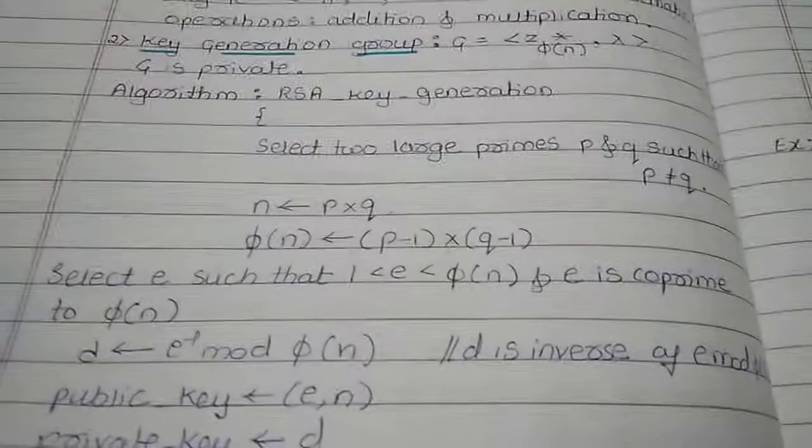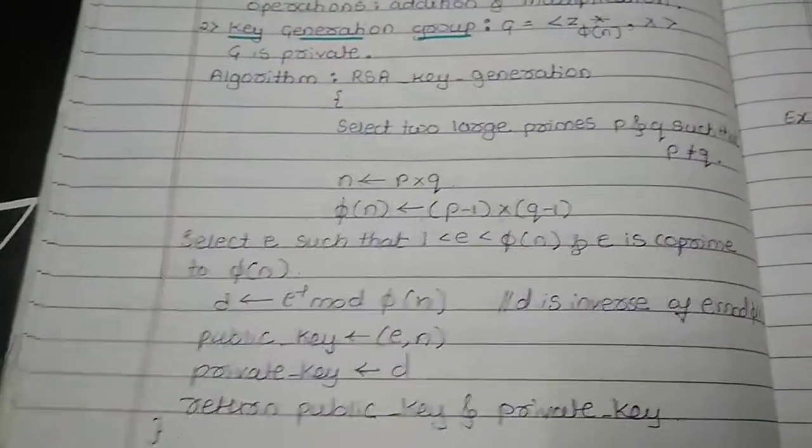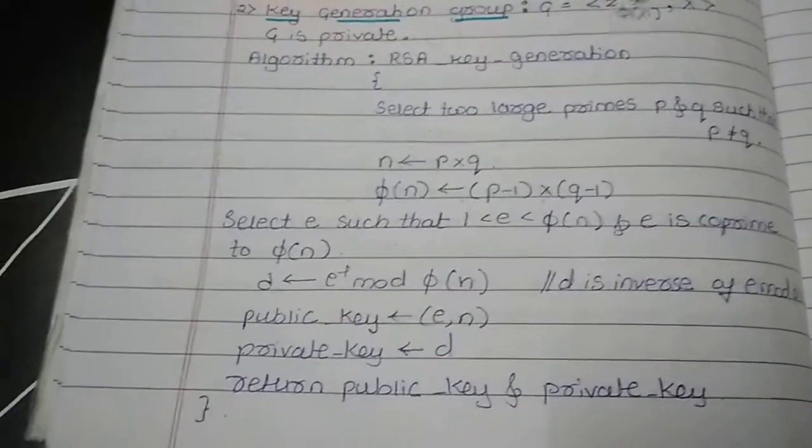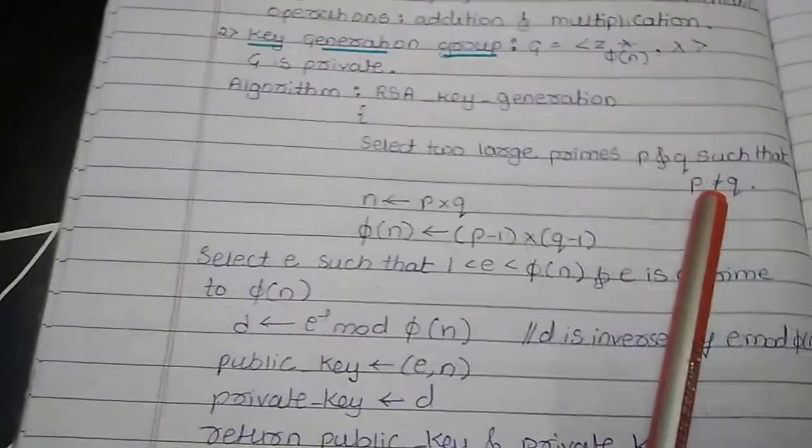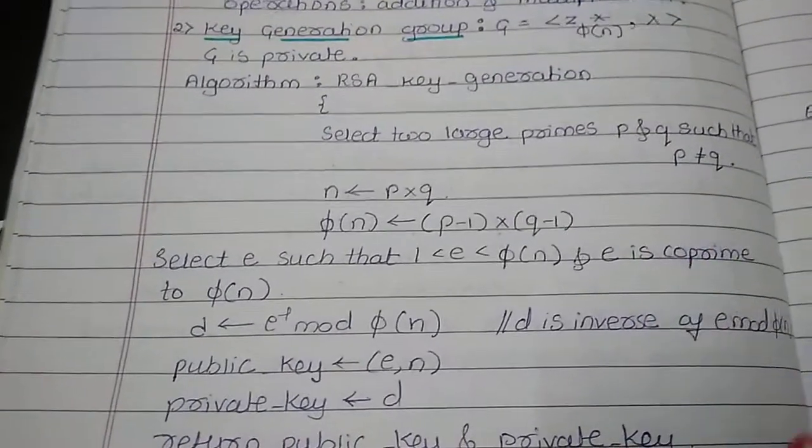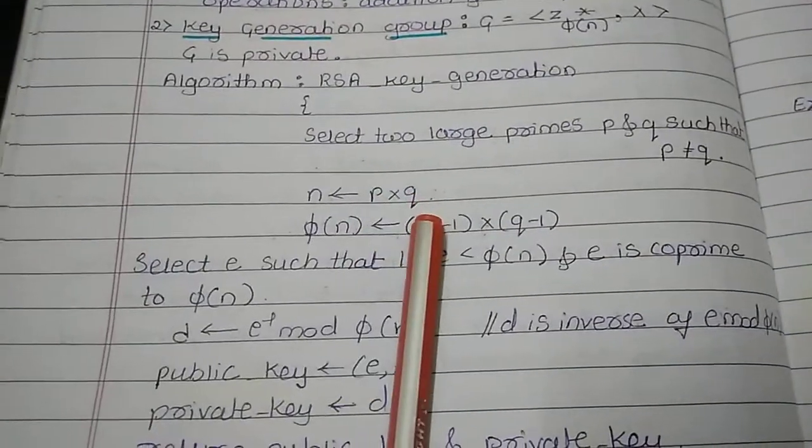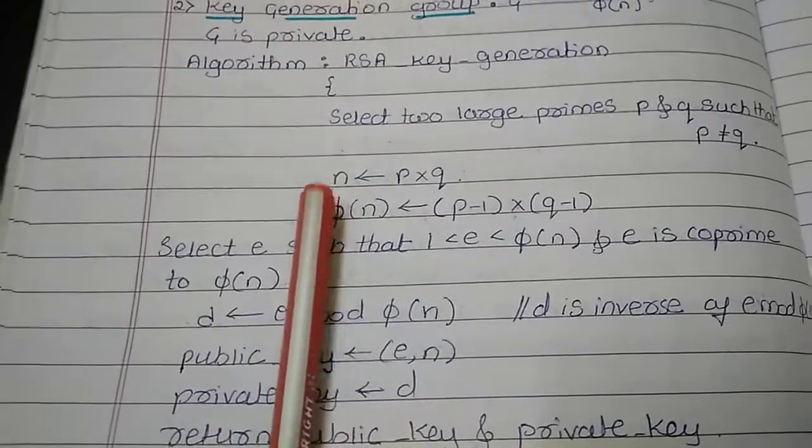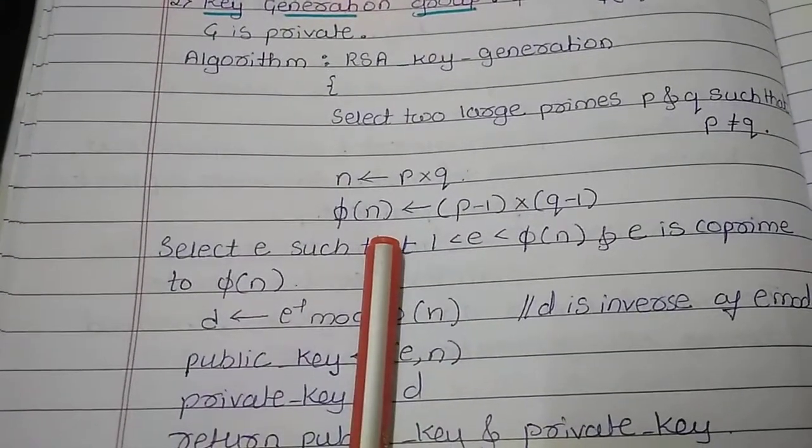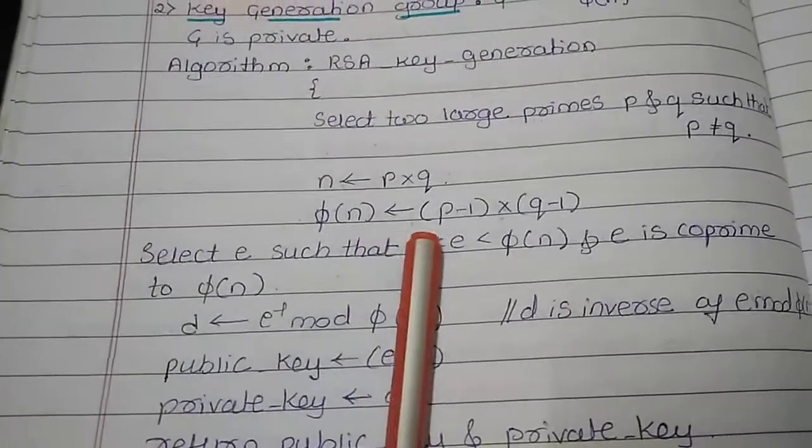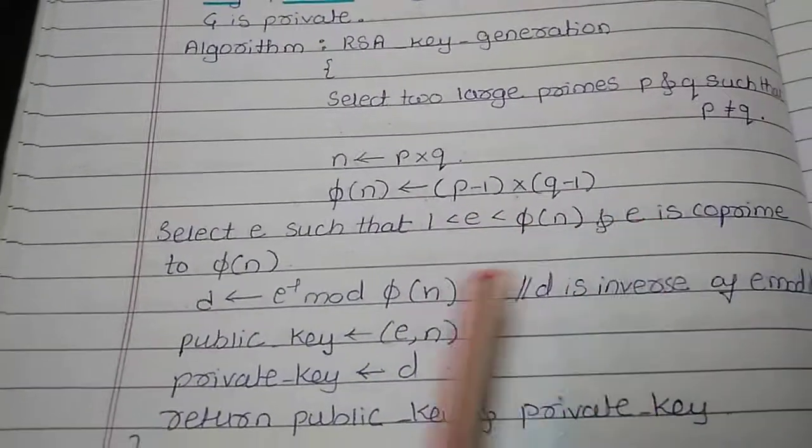For the RSA algorithm for key generation: select two large prime values P and Q such that P is not equal to Q. Then multiply P and Q to obtain the value of N which is modulo value. Then perform phi of N function which is obtained by multiplying P minus 1 and Q minus 1.